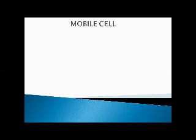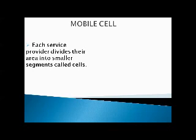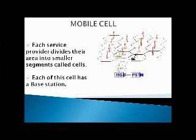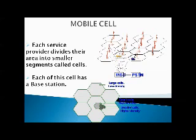A cellular system is a radio network distributed over a land area called cells. Each cell has at least one fixed-location transceiver known as a cell site or base station. Each cell uses a different set of frequencies from neighboring cells to avoid interference and provide bandwidth. When joined together, these cells provide radio coverage over a wide geographical area, enabling a large number of transceivers to communicate. More cells means more simultaneous calls possible; areas with low density require large cells, while high-density areas require smaller cells.